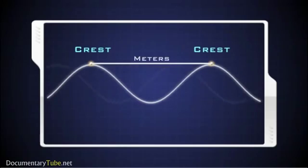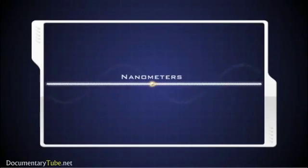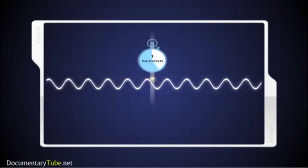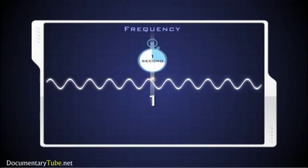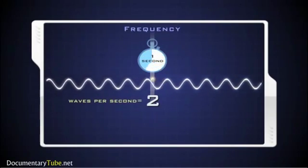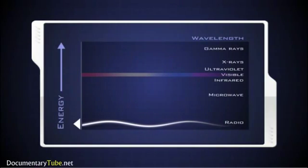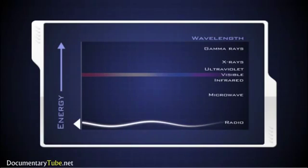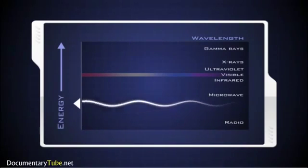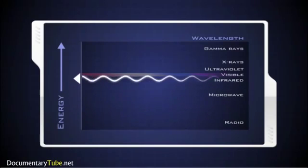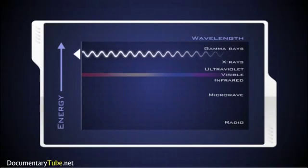While some EM wavelengths are very long and are measured in meters, many are tiny and measured in billionths of a meter. The number of crests that pass a given point within one second is the frequency of the wave. One wave or cycle per second is called a Hertz. Long EM waves such as radio waves have the lowest frequency and carry less energy.